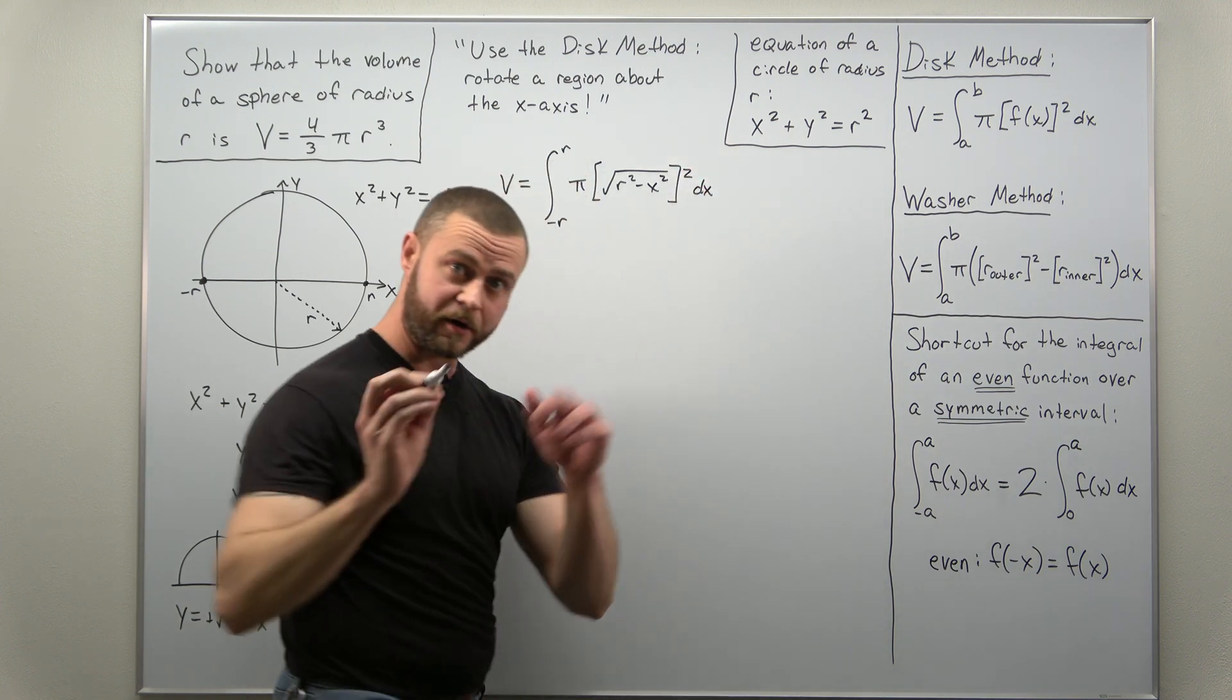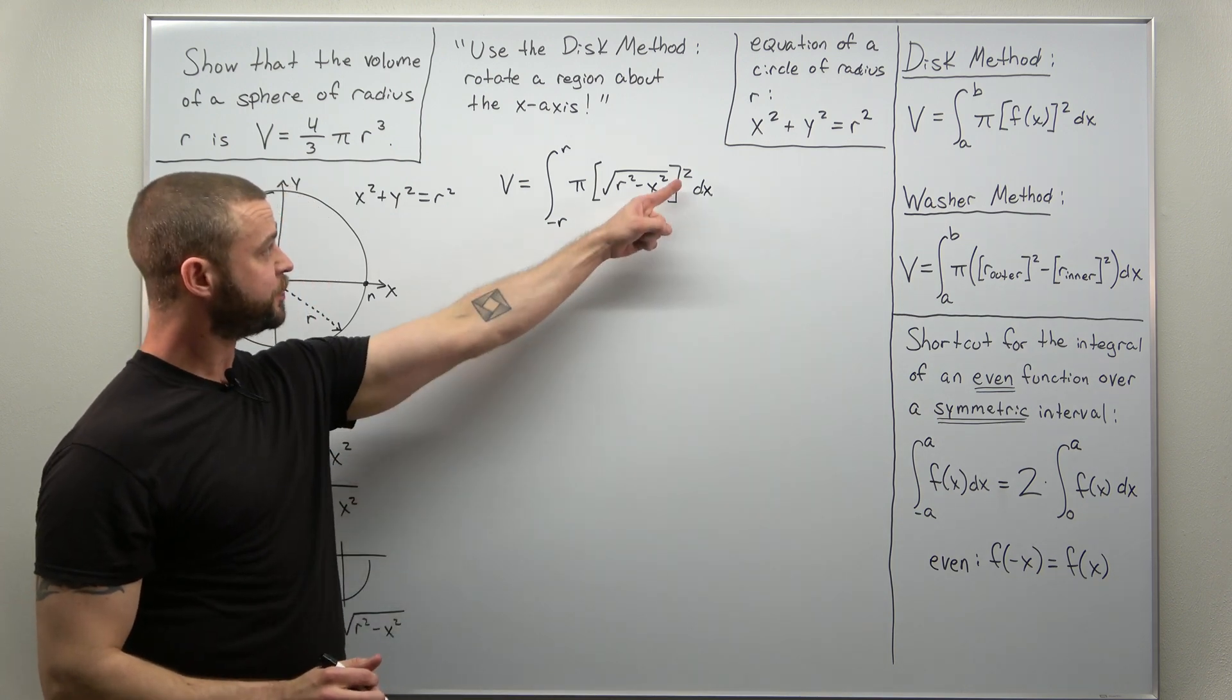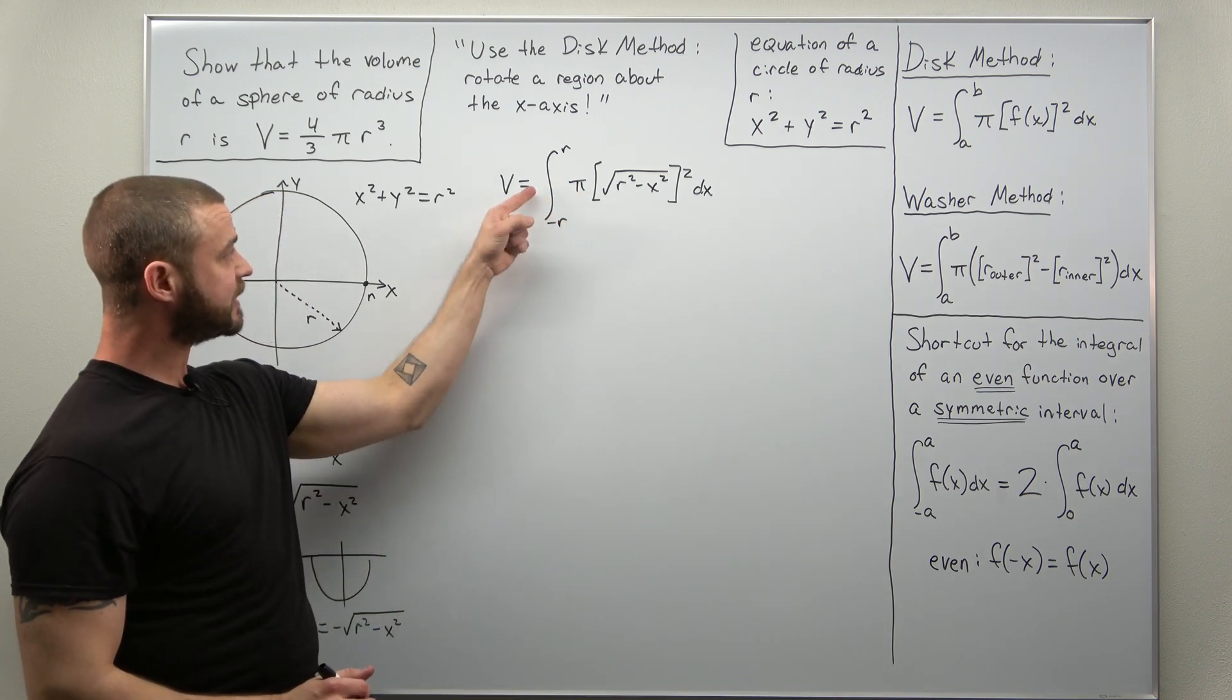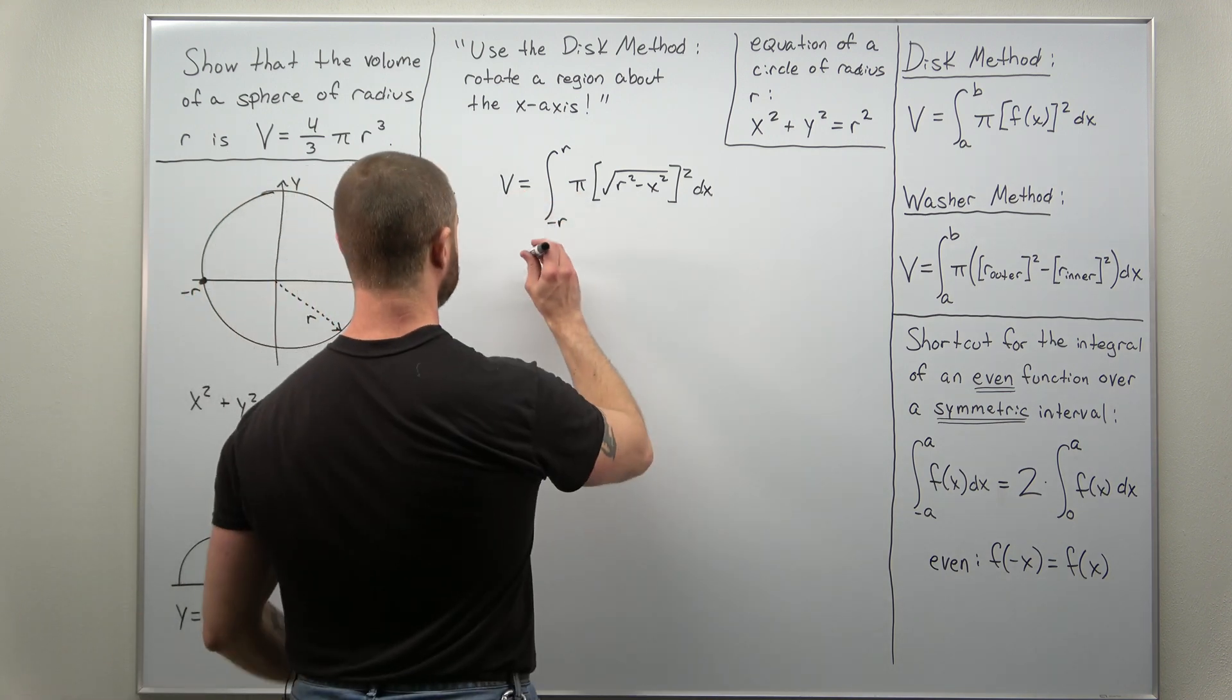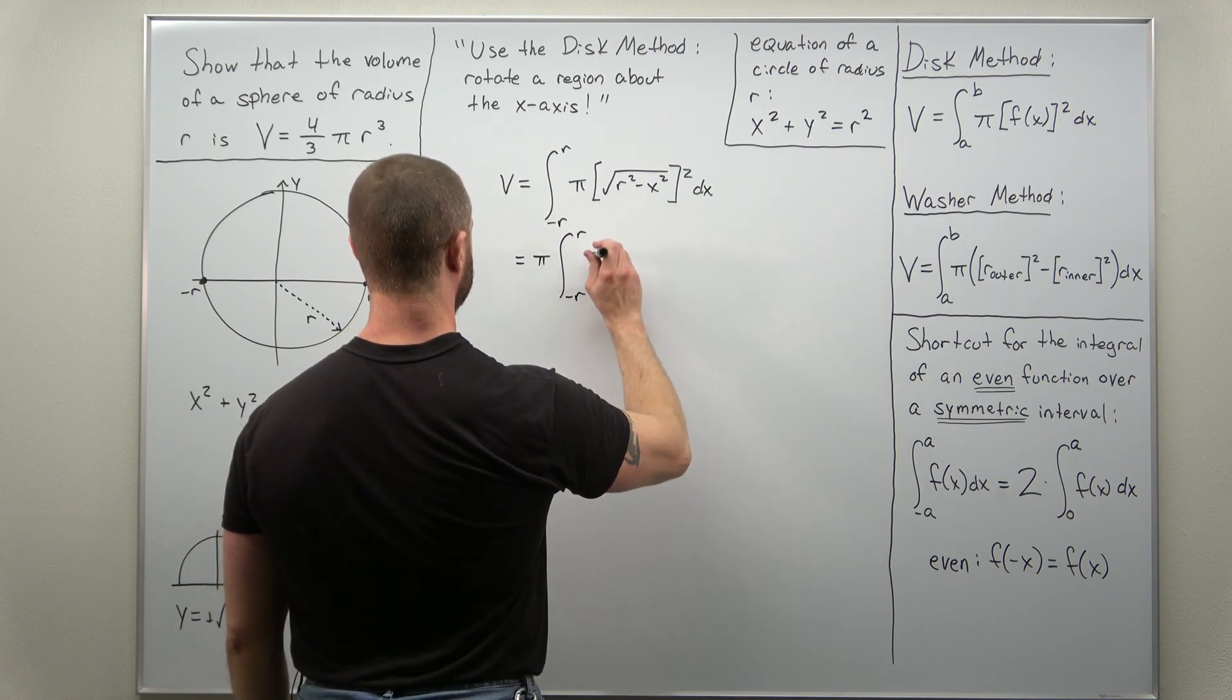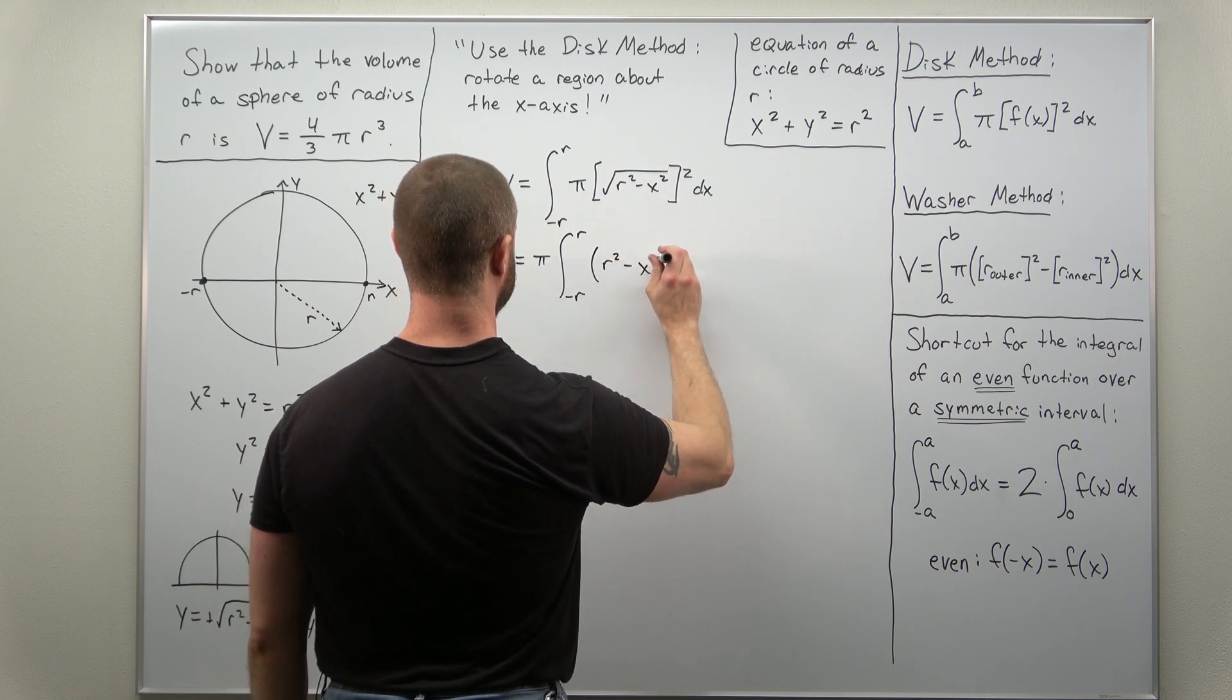All right, let's simplify this step by step. First the square and the square root will cancel and I can bring this factor of pi out front. So we're just going to be left with r squared minus x squared.